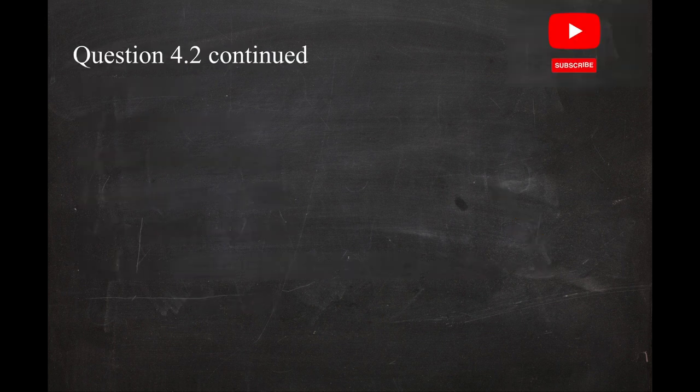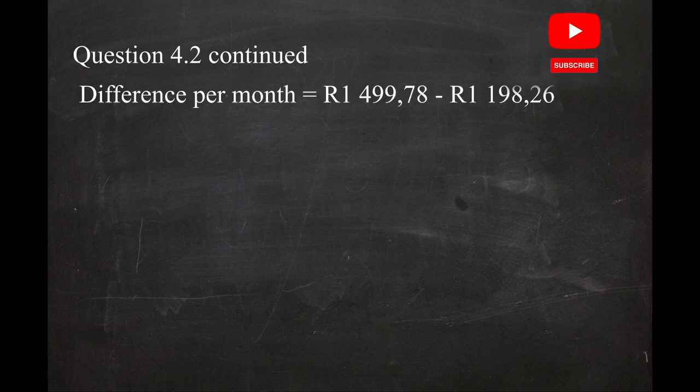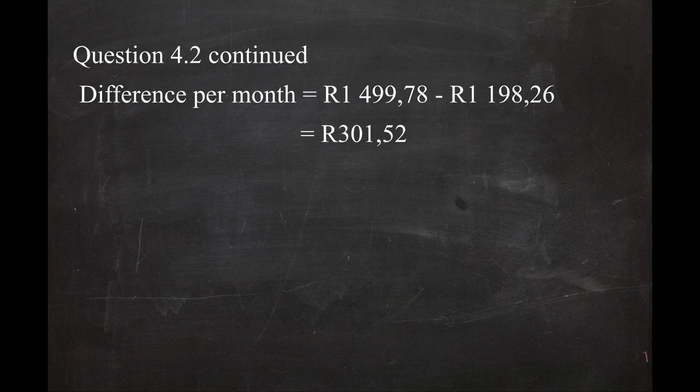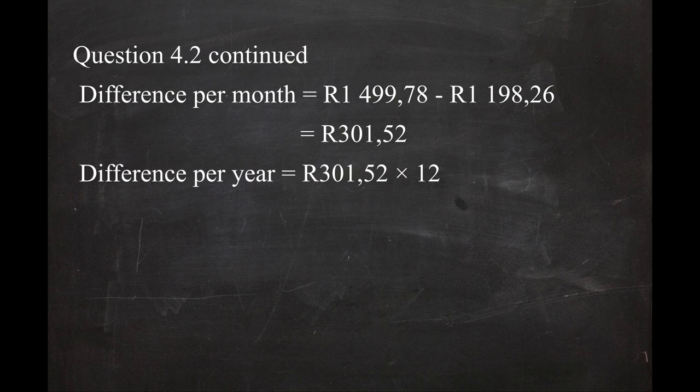Now that you have calculated the monthly charge for both Cape Town and Ekurhuleni, find the difference: R1,499.78 − R1,198.26 = R301.52 per month. Multiplying by 12 months gives an annual difference of R3,618.24 per year.